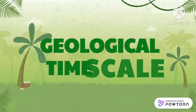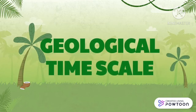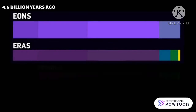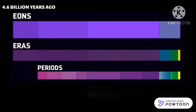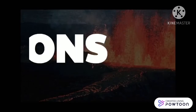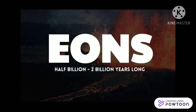A geological timescale is organized in five subgroups: eons, eras, periods, epochs, and ages. Eons are the largest duration of time, ranging from a half billion to nearly two billion years.